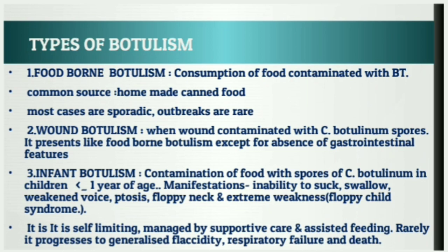There are mainly five types of botulism: foodborne botulism, wound botulism, infant botulism, adult intestinal botulism, and iatrogenic botulism. Foodborne botulism results from the consumption of food contaminated with preformed botulinum toxin — the most common source being homemade canned food. Most cases are sporadic, meaning they occur at irregular intervals in scattered or isolated manner, and outbreaks are rare. Wound botulism results from contamination of a wound with Clostridium botulinum spores and presents like foodborne botulism except without gastrointestinal features.